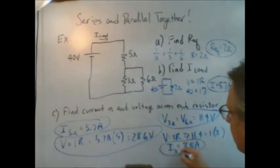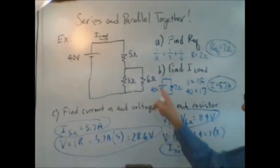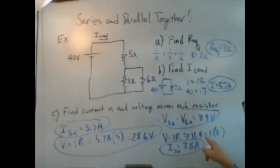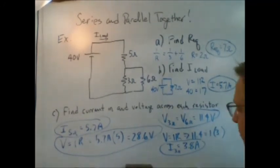This is the current in the 3-ohm resistor. And the current through the 6-ohm resistor would just be 11.4 divided by 6, which equals 1.9 amps.